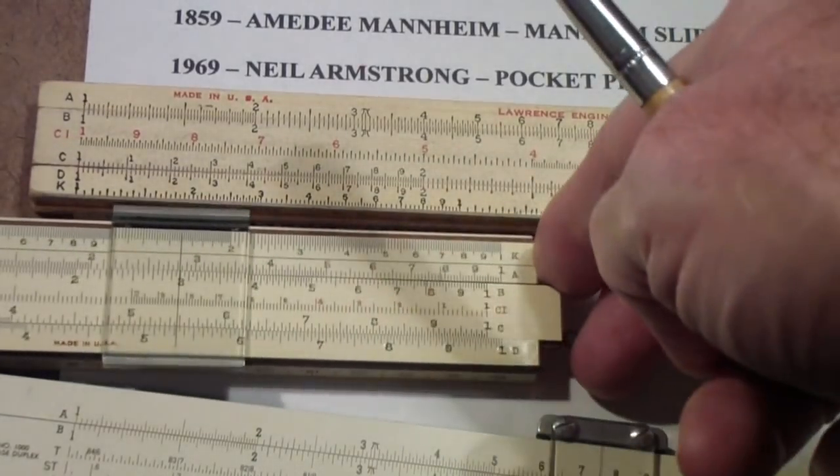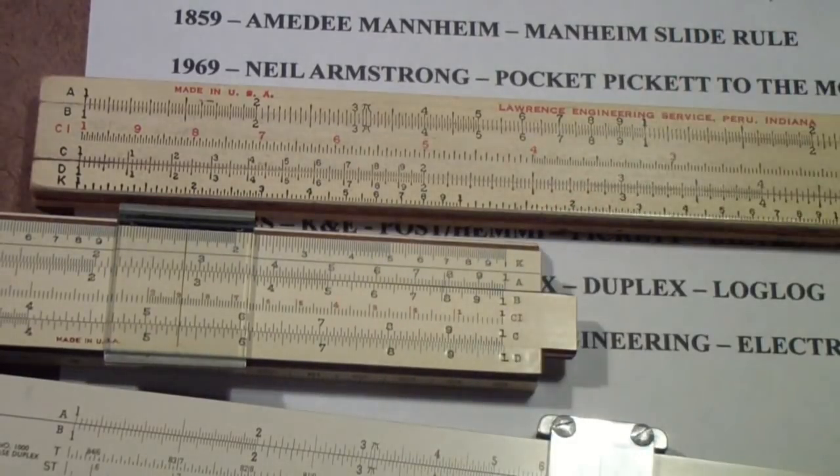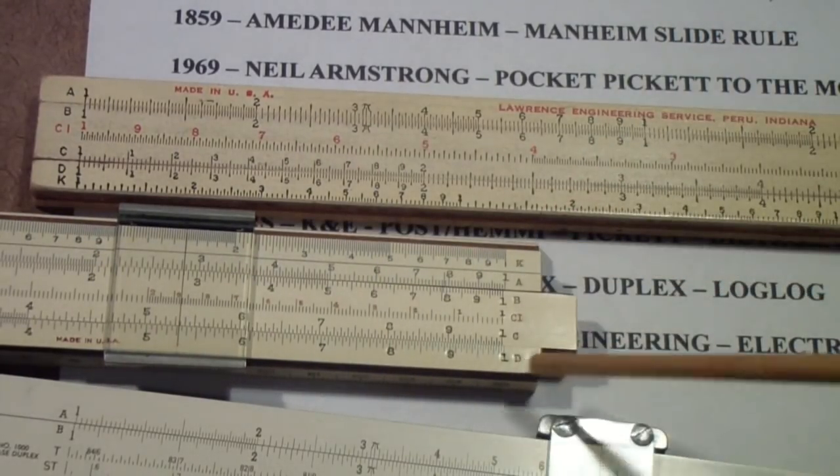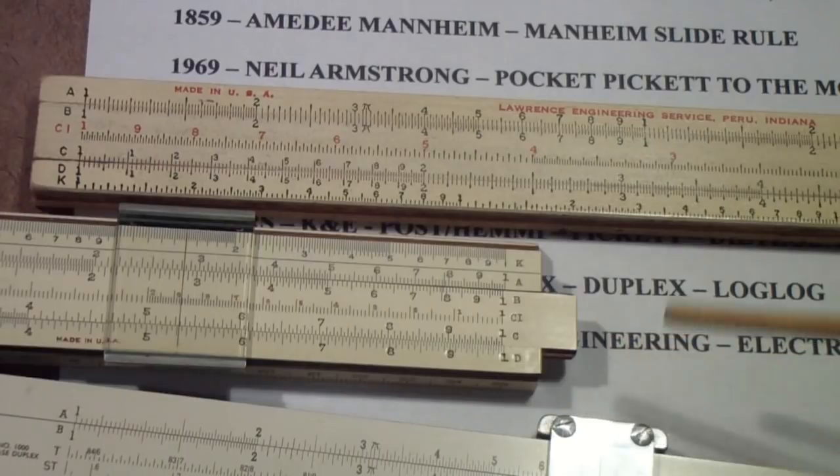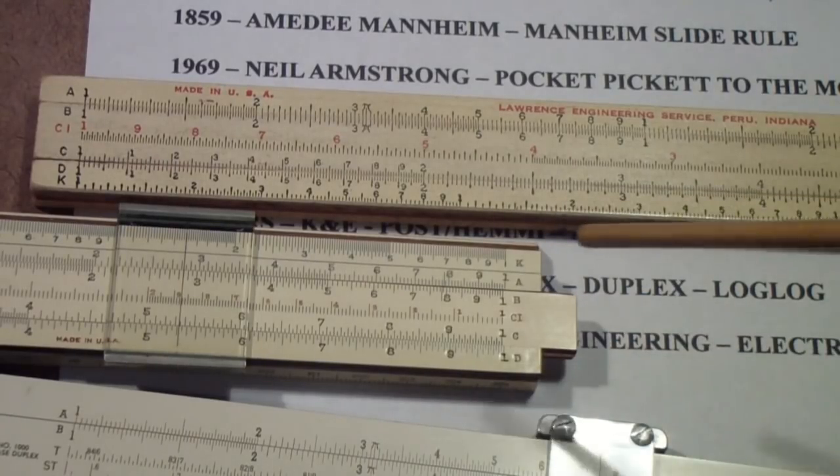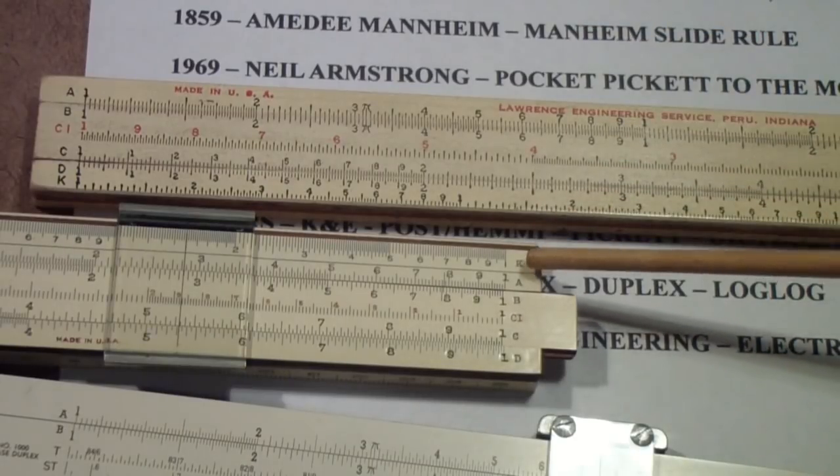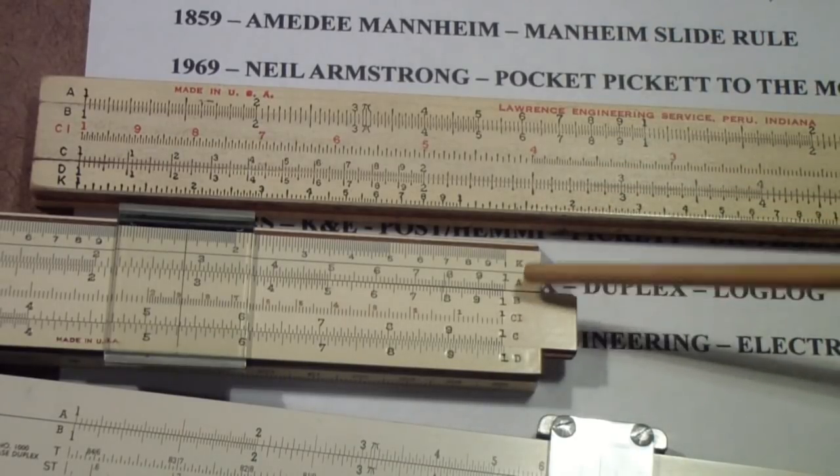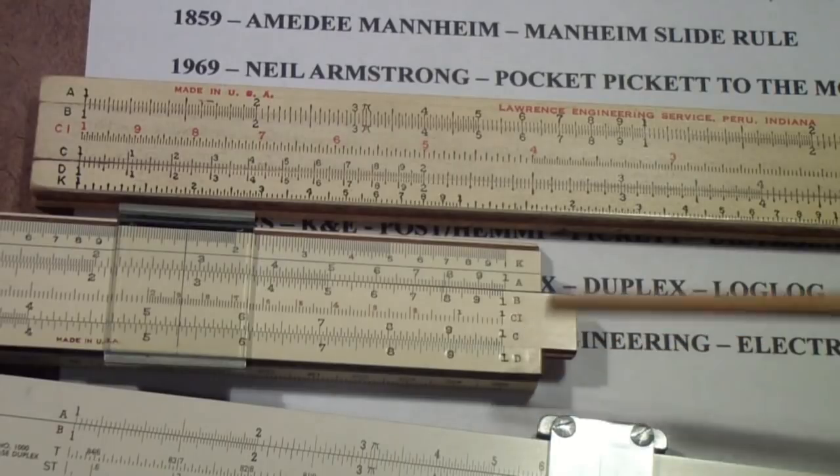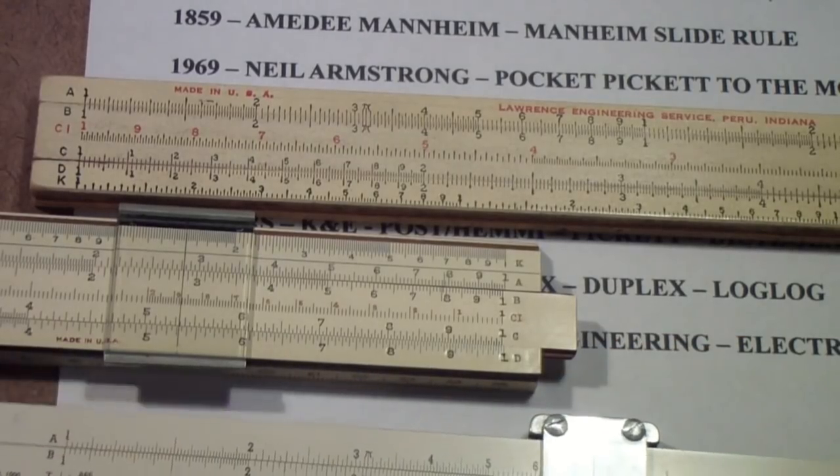Now, this is another Mannheim slide rule, and notice in this case, it's the same scales, but they are arranged a little differently. In this case, the K scale is at the top, then the A, B, CI, and then C and D.